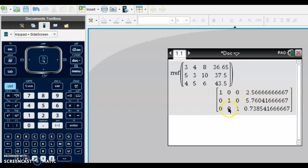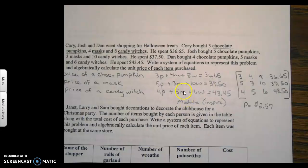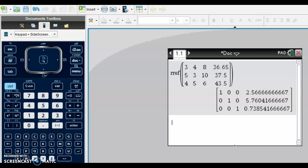The second column was our masks. We look for one mask. Here we have zero masks, here we have zero masks. We want to go where there's one mask. Our unit price, one mask is going to cost us $5.76. And then finally we had our candy witches. One candy witch is going to cost us $0.74.